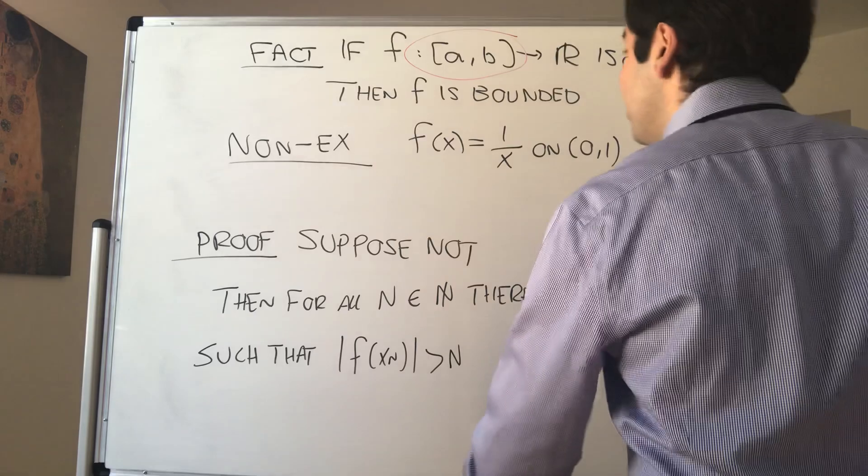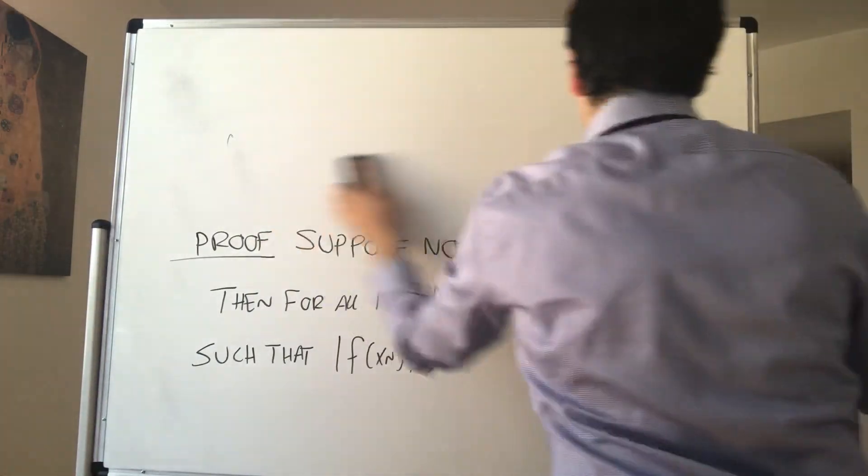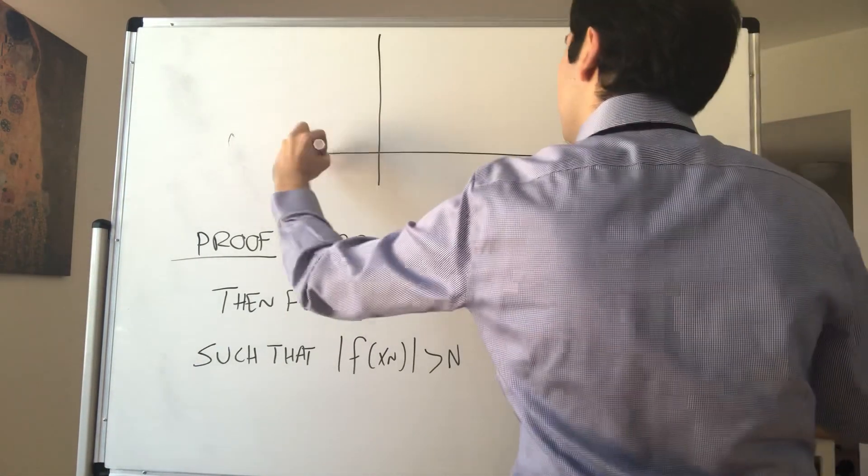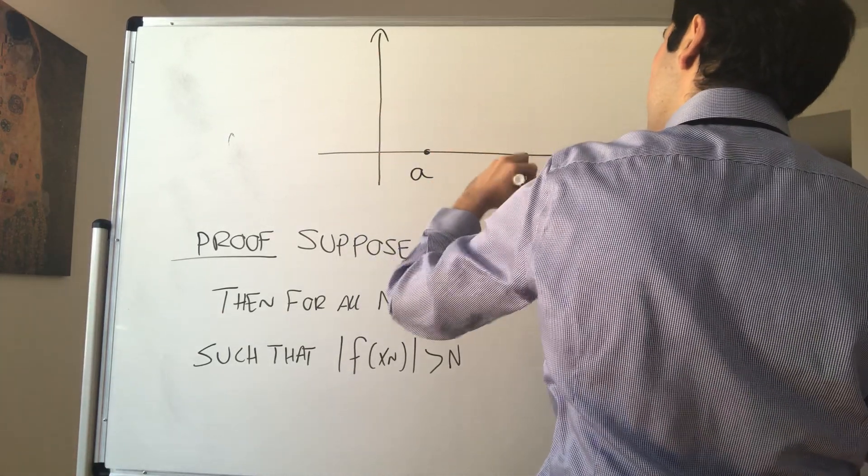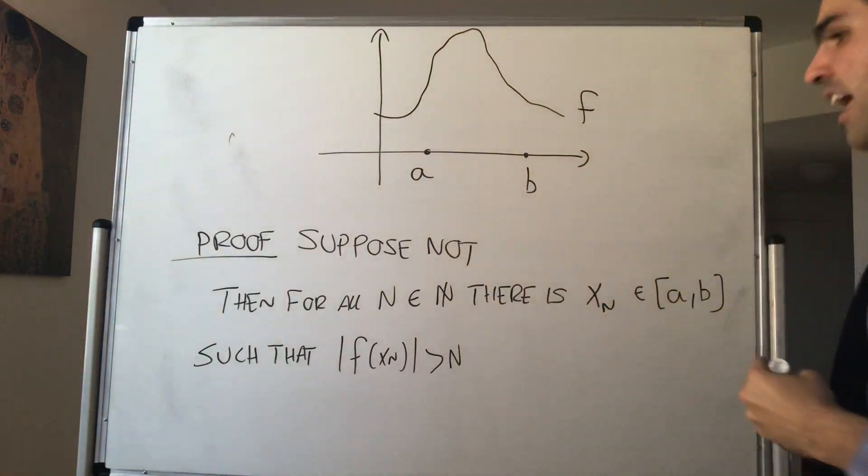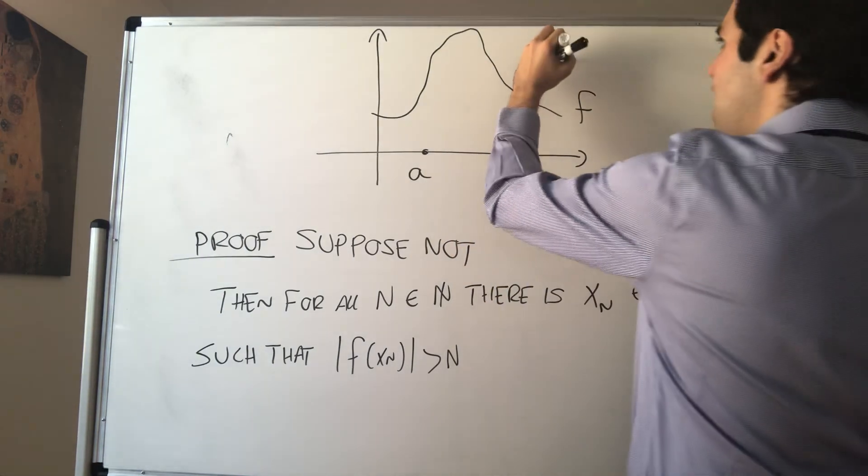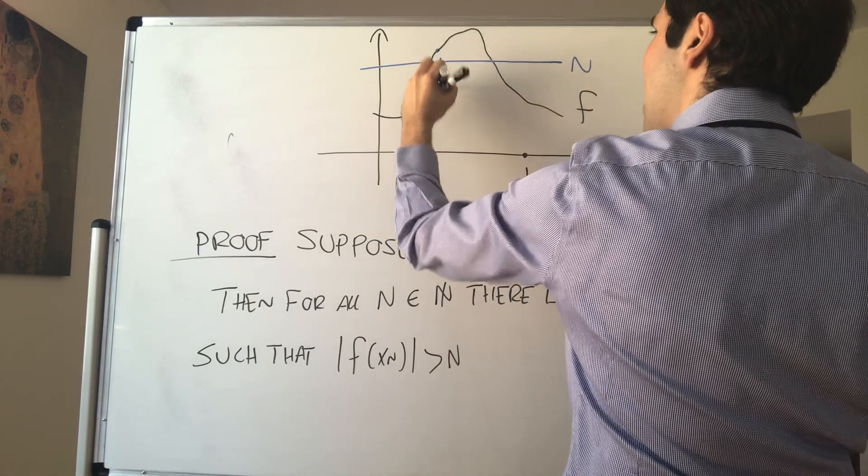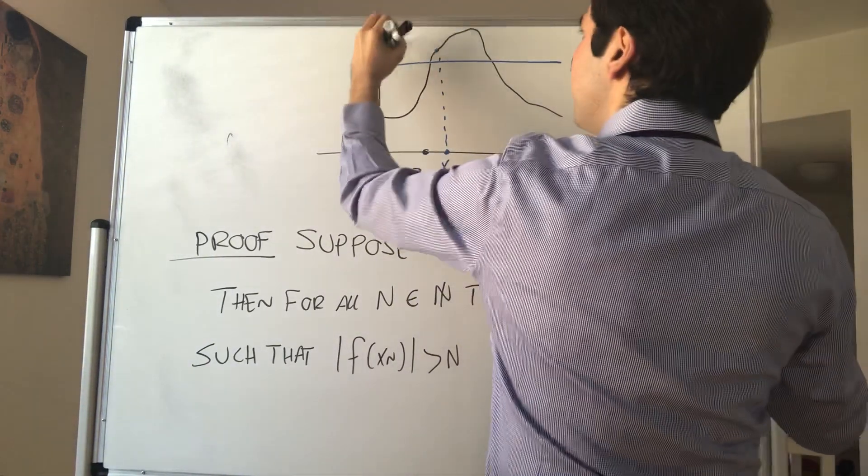So let me draw a quick picture of what's going on. Suppose you have a function f on your closed interval [a,b]. Then what we're saying if f is not bounded, it means no matter how big N is, you can always find some xₙ such that f(xₙ) is bigger than N.